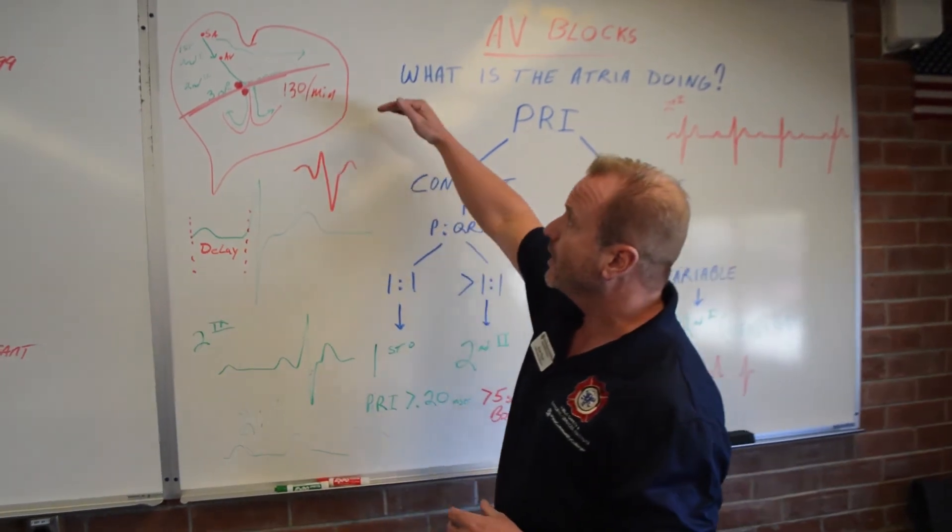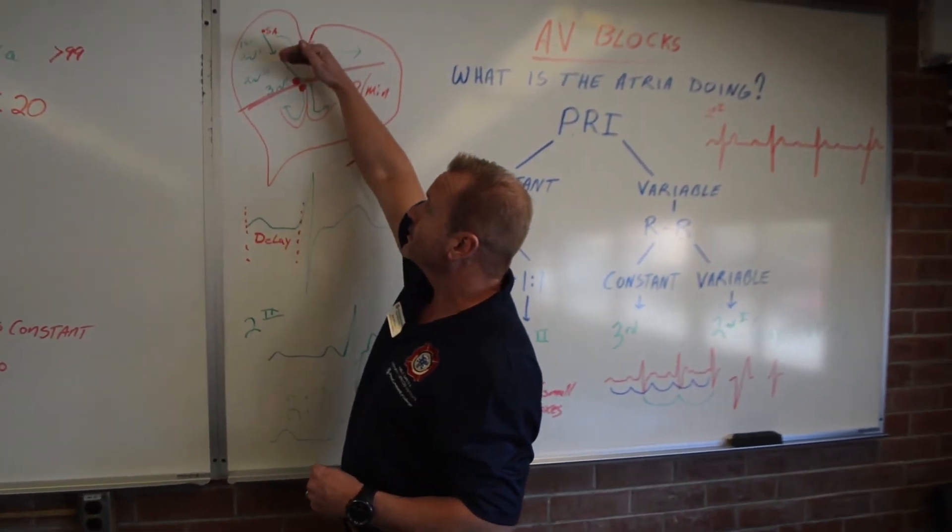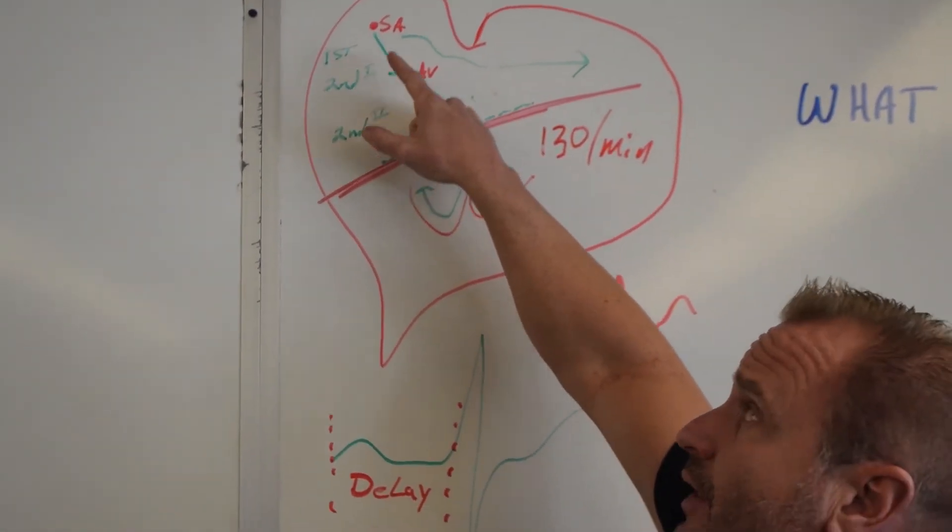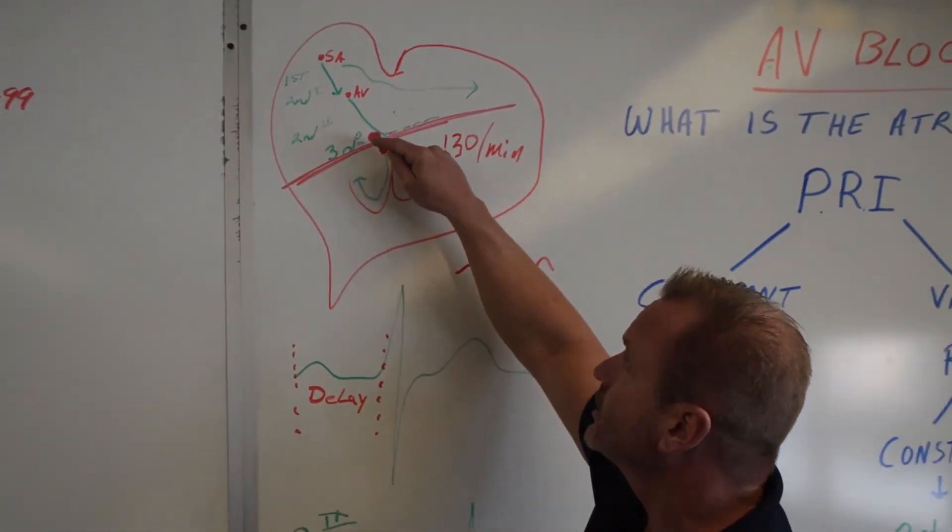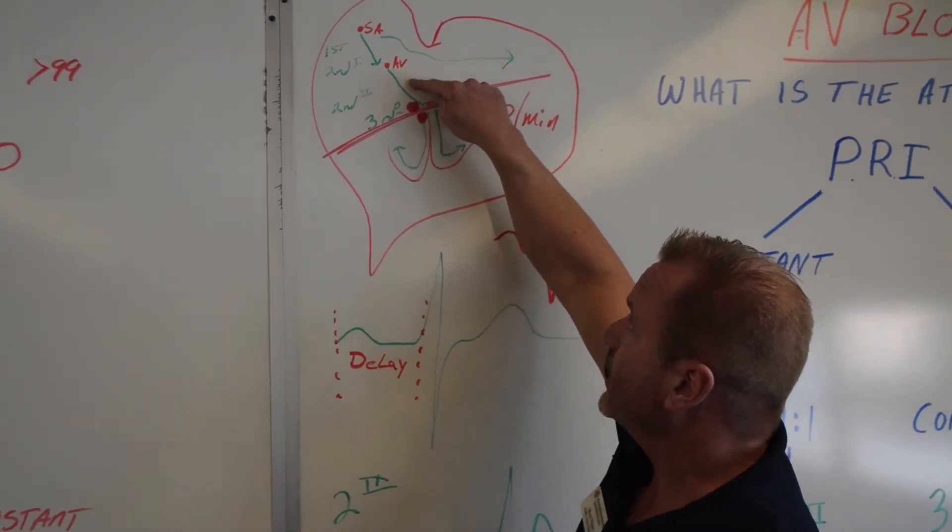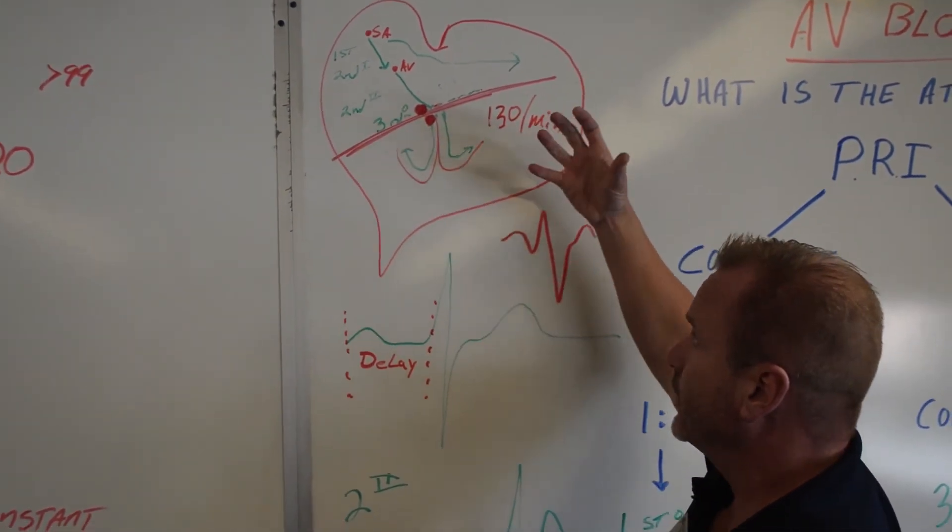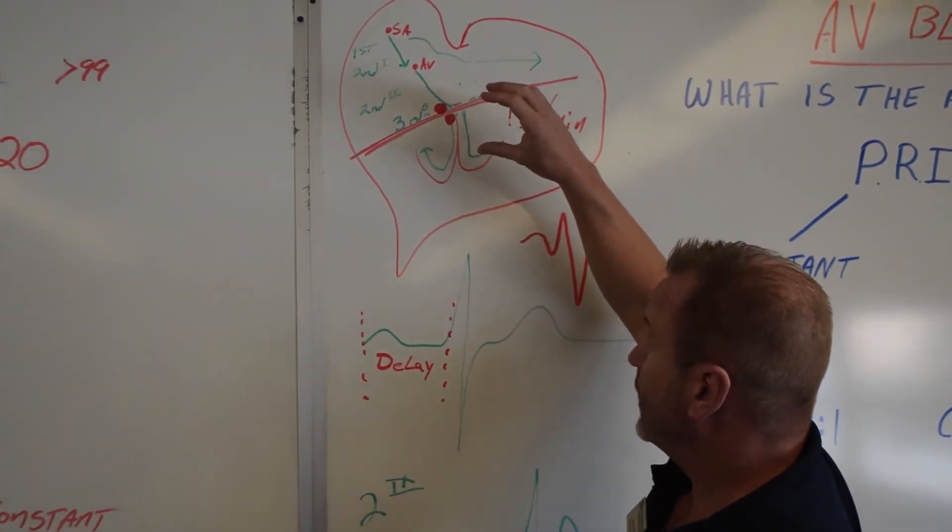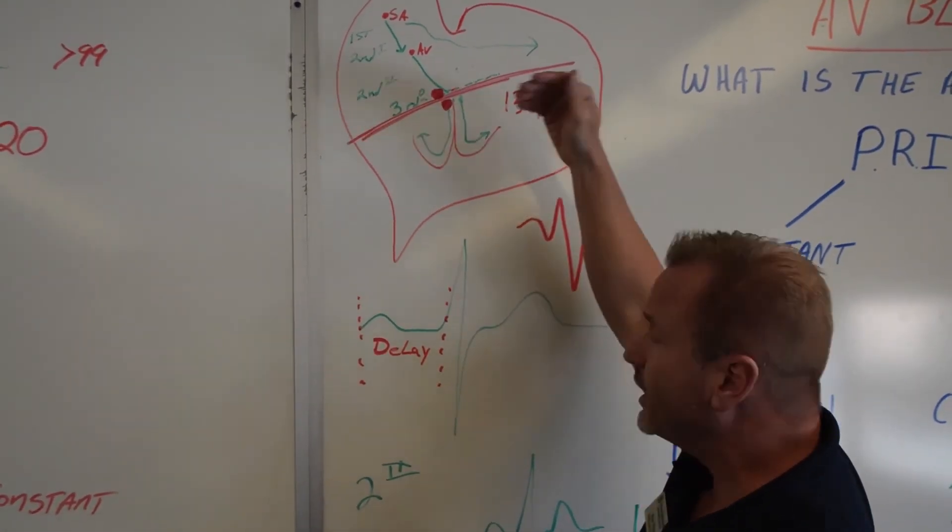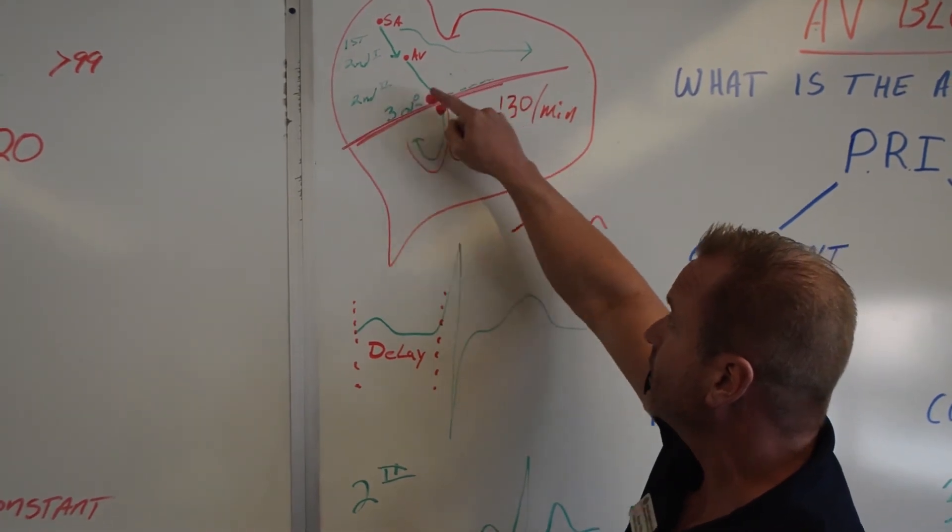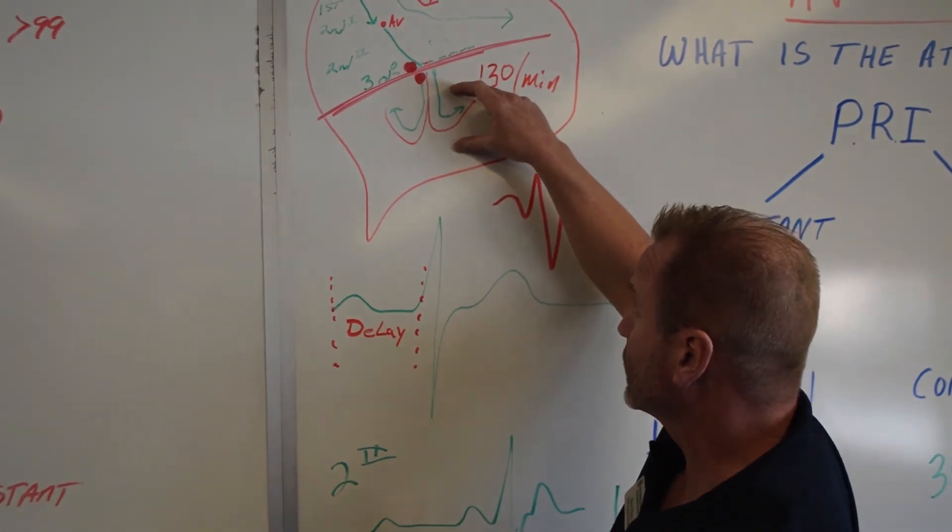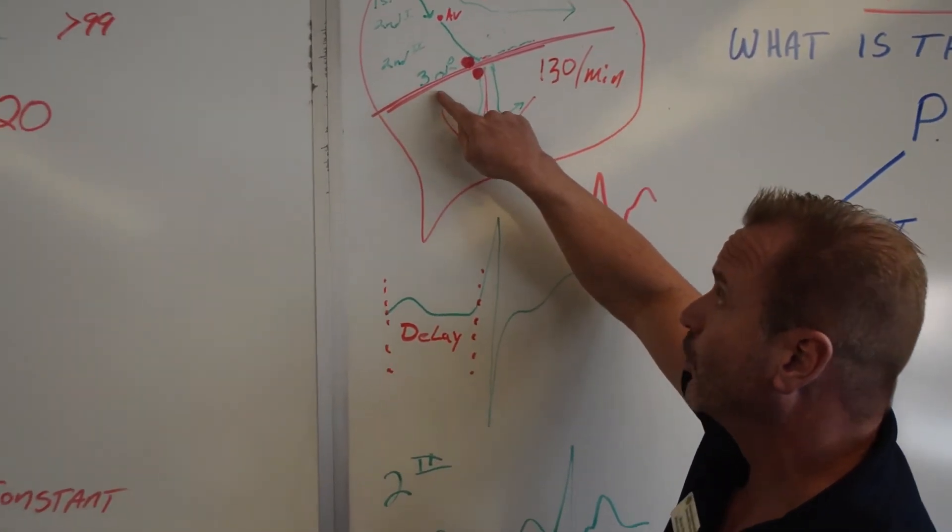So we're going to do our take home points and our wrap up. Starting here, remember that as your block increases, our first degree is pretty benign in just about everybody. Your second degree type one, the SA node's still kicking out those beats, but there's an AV block. It's not conducting down. It's starting to get worse. Your second degree type two is getting even worse. Your atria is still kicking out those beats, but there's a blockage. They're not conducting to the ventricles. Remember, the ventricle is what gives us our brain, our lungs, our organs, our blood supply.